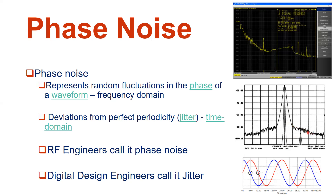In the case of strong phase noise, if there are other signals whose frequency spectrum and power level are small compared to the main signal, those signals get hidden under the phase noise of the main signal — making them hard to detect in the frequency domain. Radio frequency engineers call this phase noise; digital design engineers call it jitter.